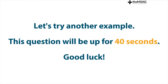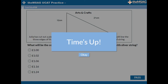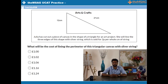The final question of a lesson always has to be the hardest, right? Go on, challenge yourself. Question 3. Julia has cut out a piece of canvas in the shape of a triangle for an art project. She will line the three edges of this shape with silver string, which is sold for 2p per whole centimetre of string. What will be the cost of lining the perimeter of this triangular canvas with silver string?